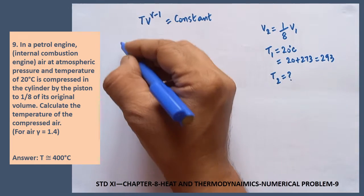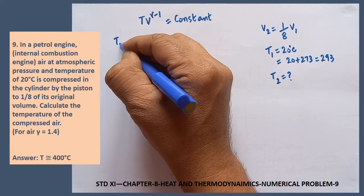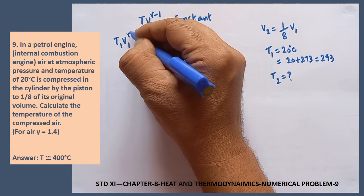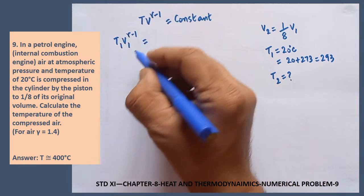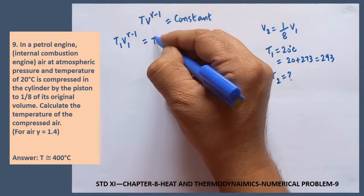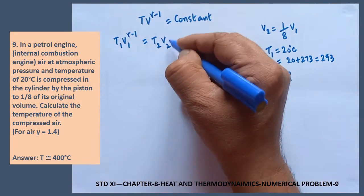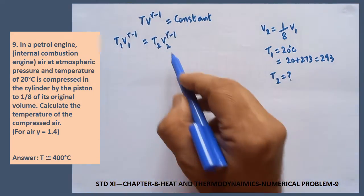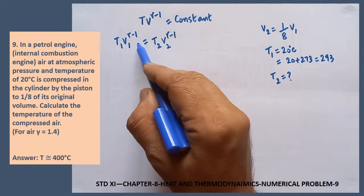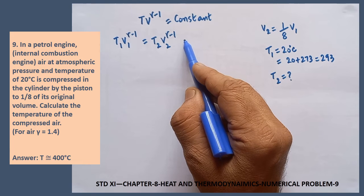Now, this one could be written in another form. That is, T1 V1 gamma minus 1, this is the thing before compression. T2 V2 gamma minus 1, this equation to be written after compression. Both two are equal to constant.